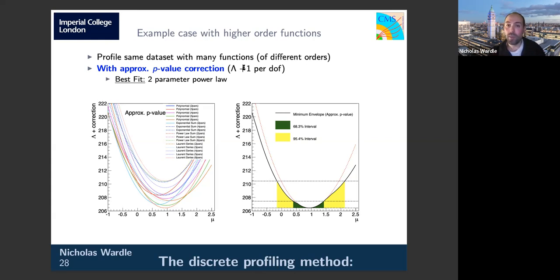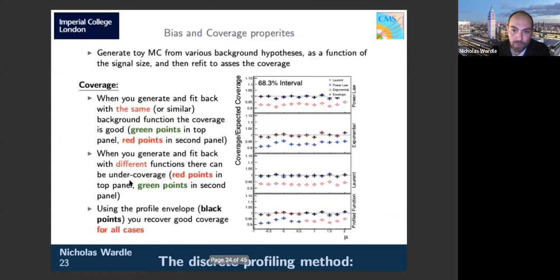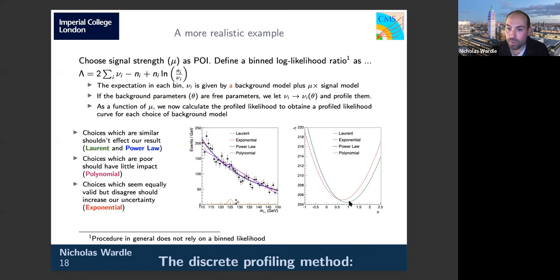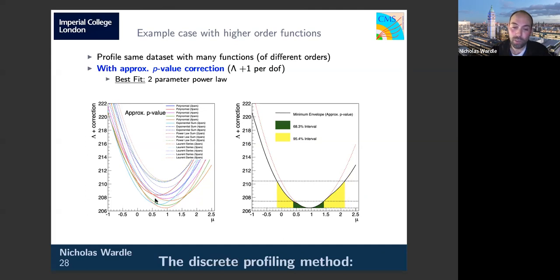With the p-value correction, the red curve gives the profile likelihood if you just looked at the best-fitting single function, whereas the black one takes into account contributions from all other functions. With just four functions you have two or three contributing, but as you throw in more functions you start to fill out a smoother-looking envelope.